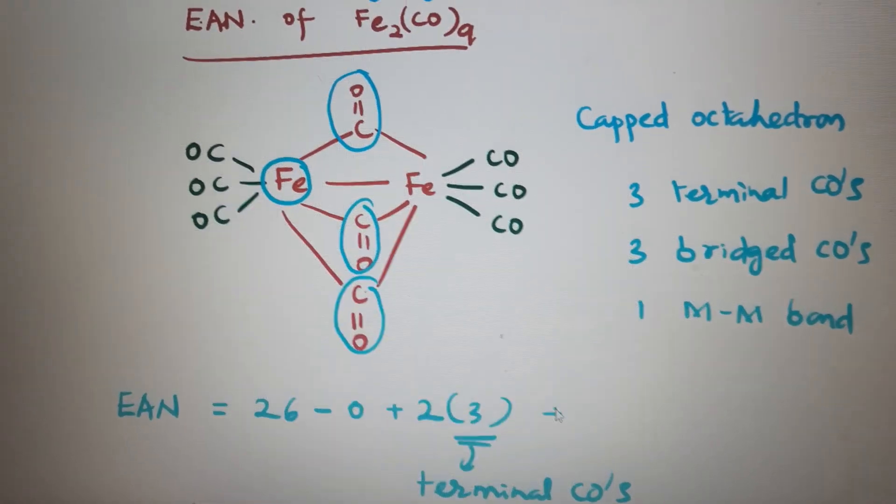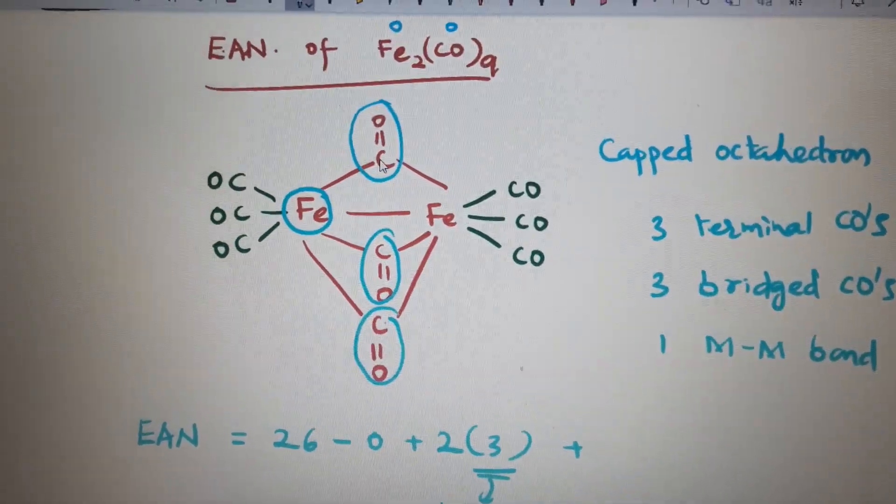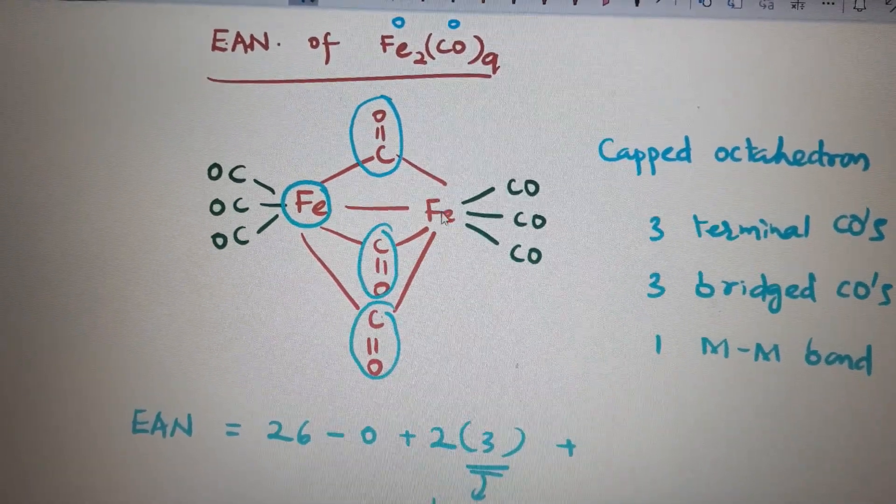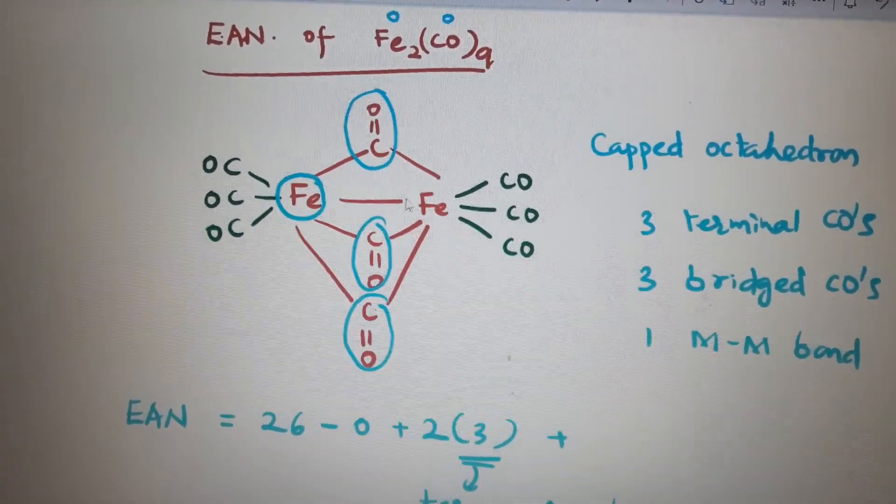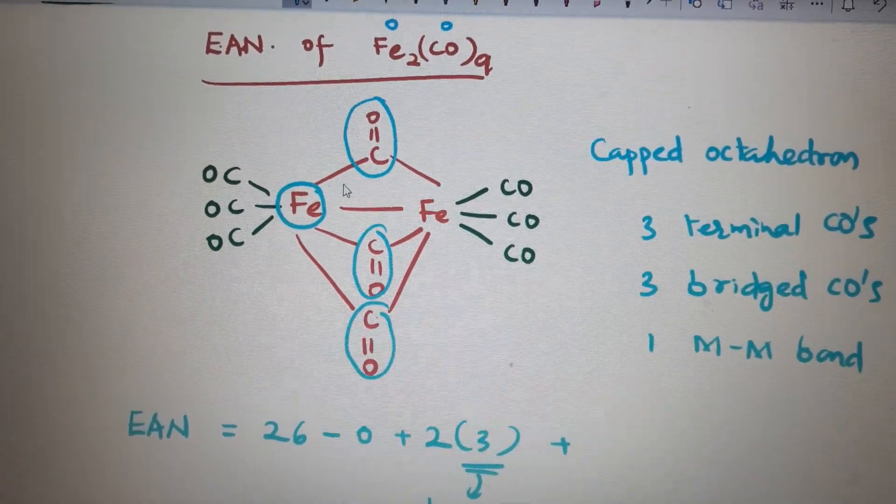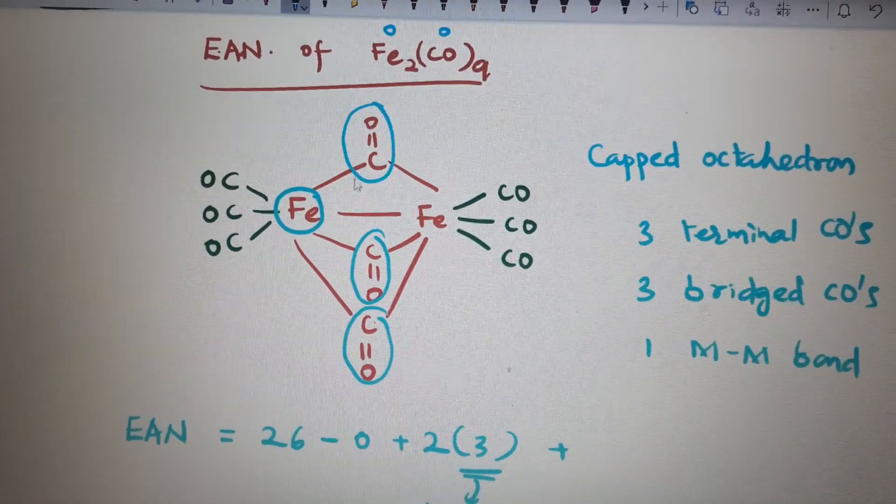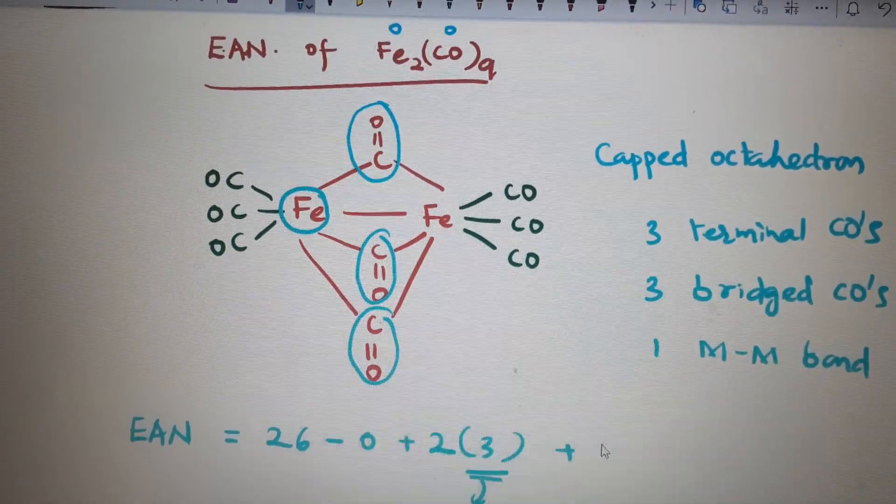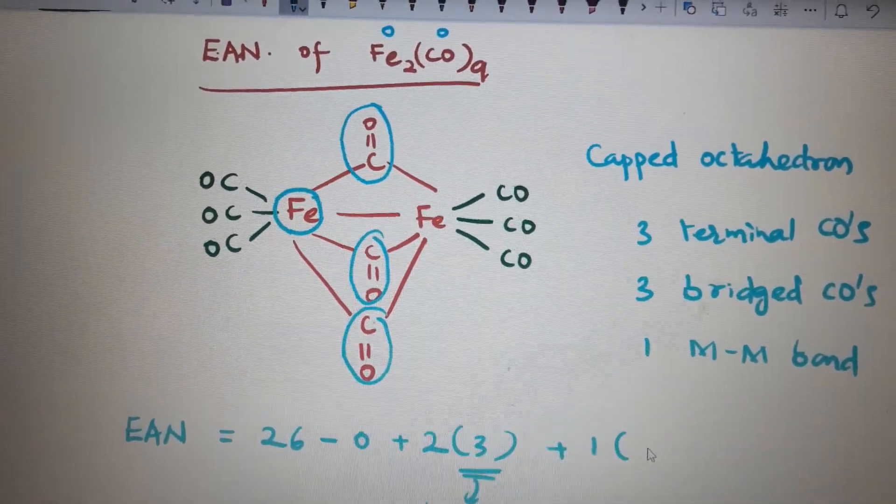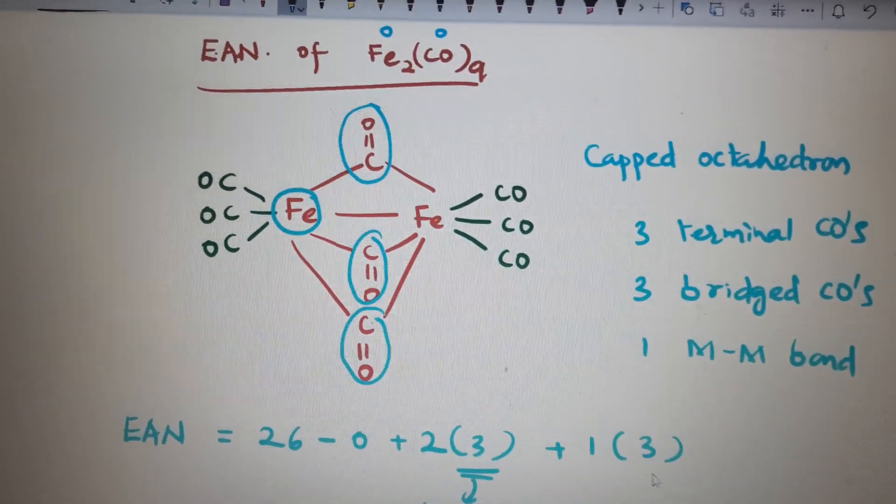Then bridged ligand giving two electrons to two metals. For two metals two electrons, for each metal one electron by bridged ligand. So one electron by each bridged ligand, like that three bridged ligands are there.